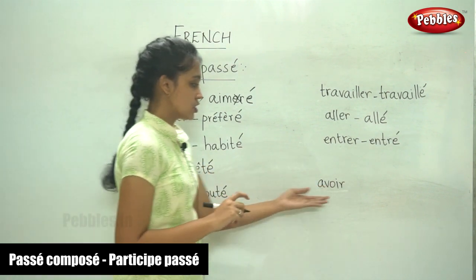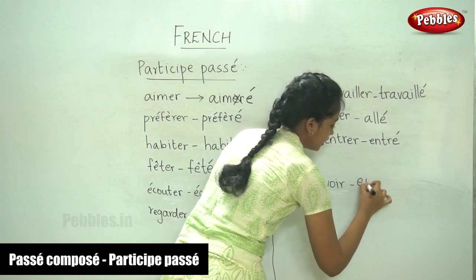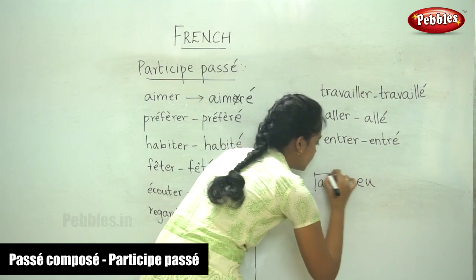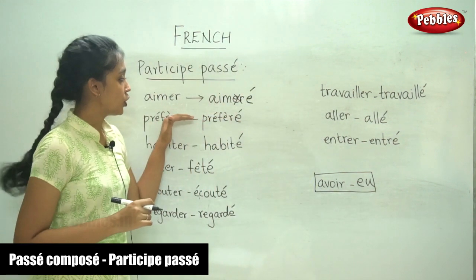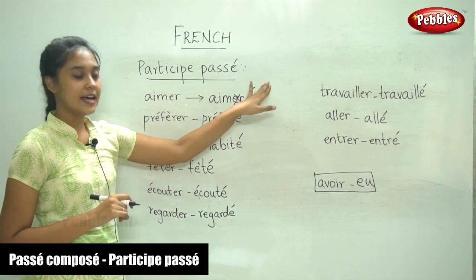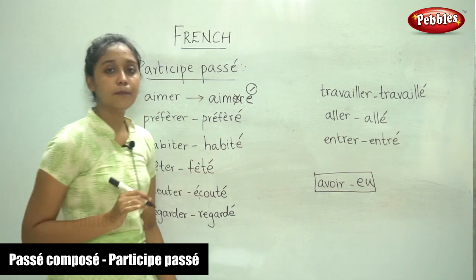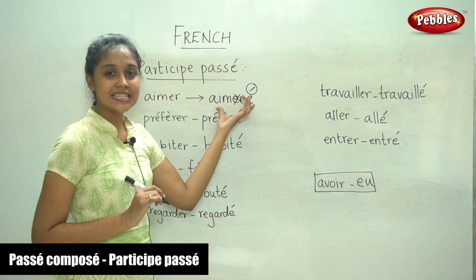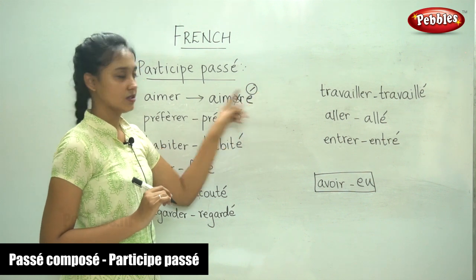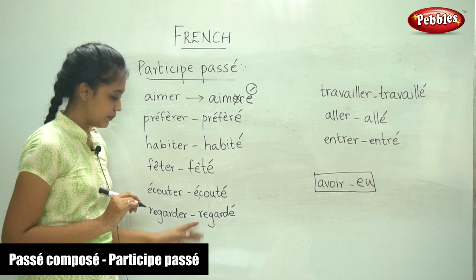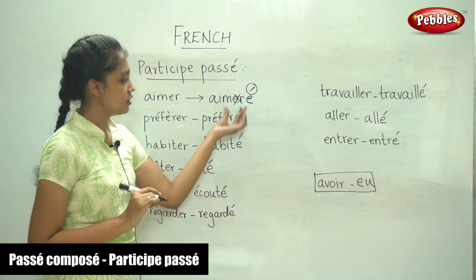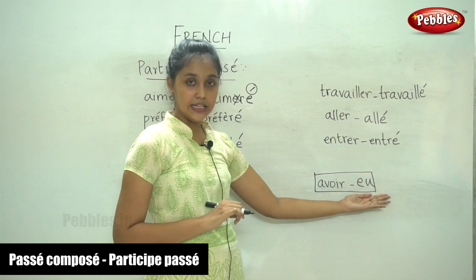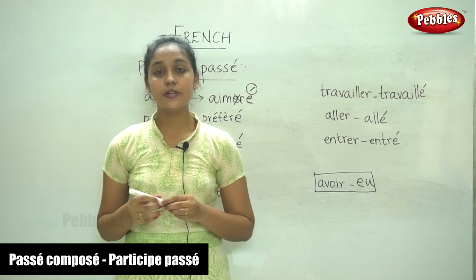For the verb avoir, this is a special form — the past participle is 'eu'. You just have to remember this. For ER verbs, it is simple: remove -er and add -é with an acute accent. This accent is very important — if you do not add it, it becomes the normal conjugated form. The acute accent shows that it is in the past participle. For avoir, remember: the past participle is 'eu'. Now you know how to write the past participle for ER verbs.